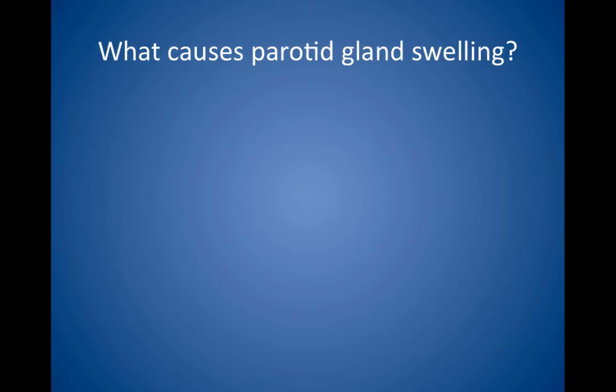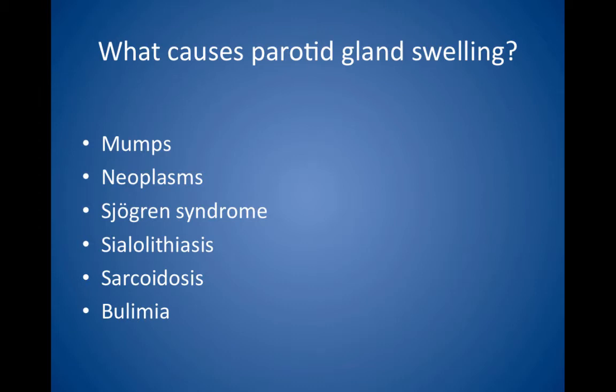What causes parotid gland swelling? The classic cause is mumps. The best treatment for mumps and the complication of infertility is prevention through immunization. Parotid gland swelling also may be caused by neoplasms, of which pleomorphic adenoma is the most common type. Sjögren syndrome, sialolithiasis (a stone in the parotid duct), sarcoidosis, and bulimia are other causes. Alcoholism can cause parotid gland hypertrophy as well. Remember that the parotid gland contains lymph nodes within its parenchyma, which is unique, and these can become enlarged in a number of conditions.